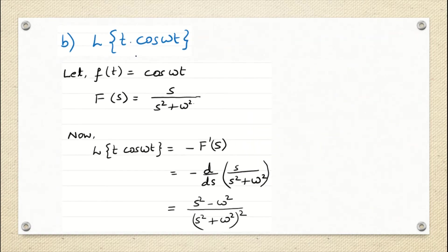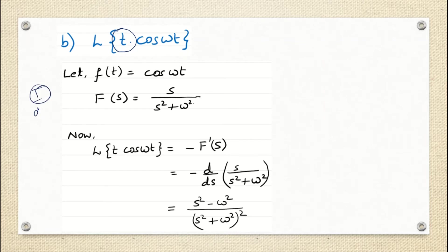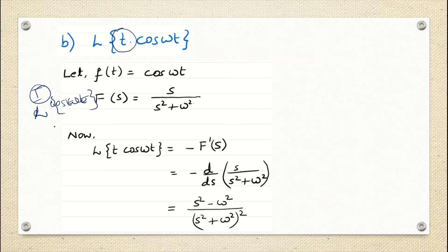Similarly, we can solve the next question using exactly the same method: t·cos(ωt). If we leave aside t, whatever remains is our f(t), so f(t) is cos(ωt). The first step is to find the Laplace transform of cos(ωt), which is s by s² plus ω². So this F(s) we have got.